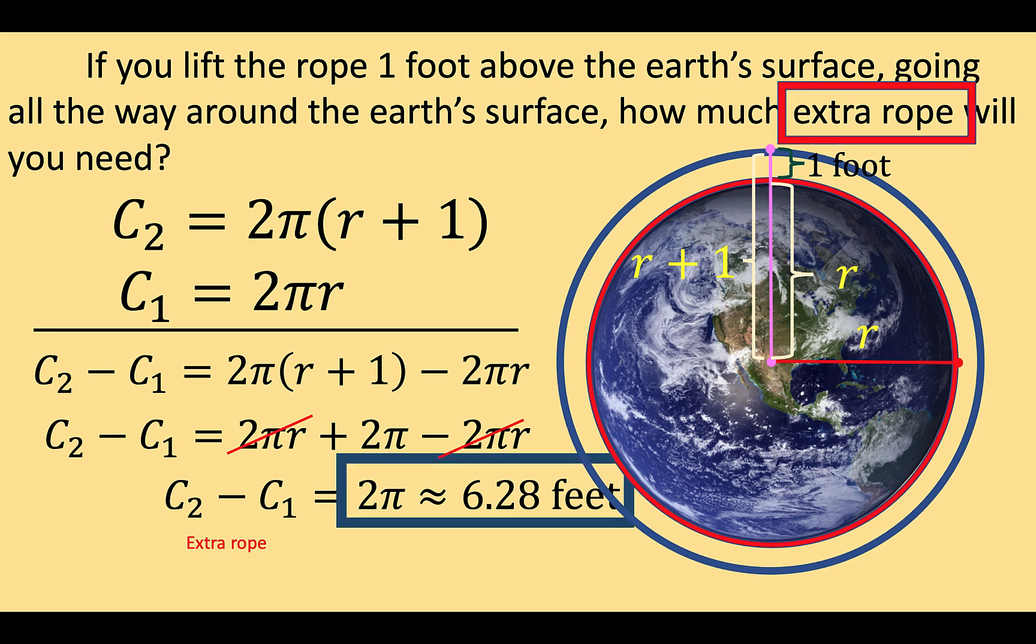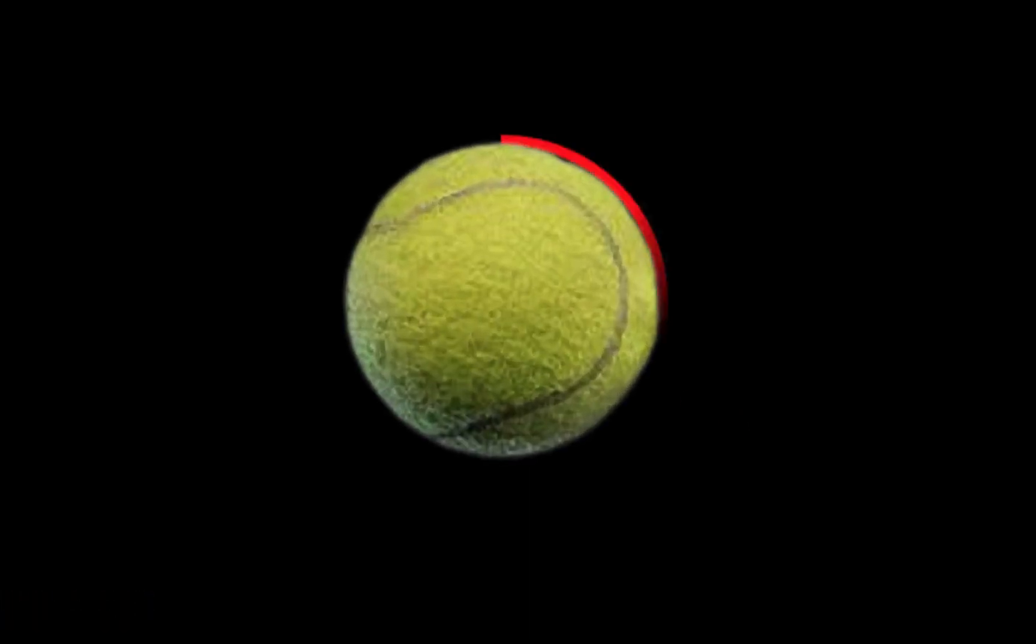Now what's mind-boggling about this situation is instead of the planet Earth, let's suppose we are just going to use a small object, a tennis ball. The circumference of the tennis ball will still be computed using the formula 2πR, where R is the radius of the tennis ball.